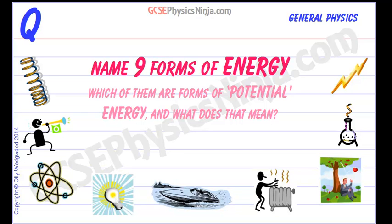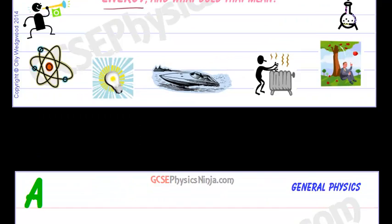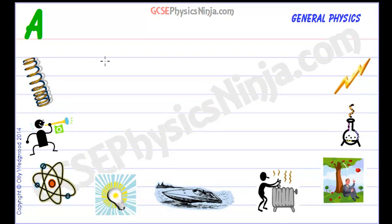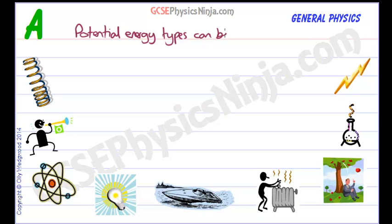Energy comes in different forms and here we've got a flashcard asking us to name nine forms of energy, which of them are forms of potential energy, and what does that mean? Potential means that an energy can be stored easily — potential energy types can be stored easily.